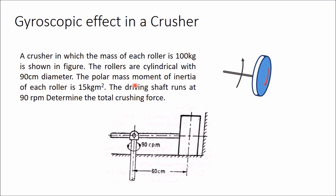The polar mass moment of inertia of each roller is 15 kg·m². The moment of inertia of this roller about this polar axis is given as 15 kg·m². The driving shaft runs at 90 rpm. Determine the total crushing force.